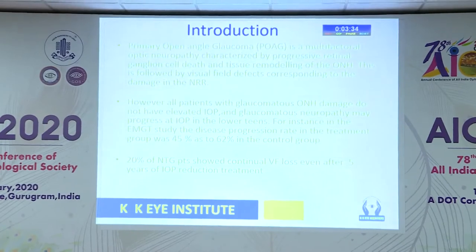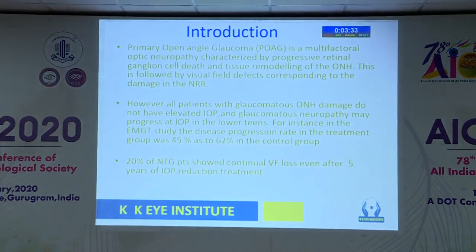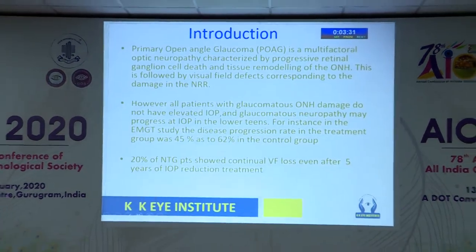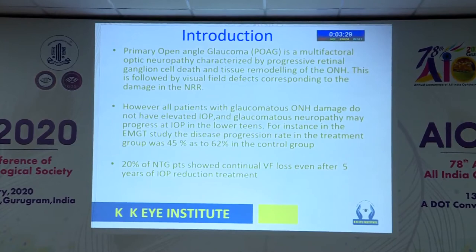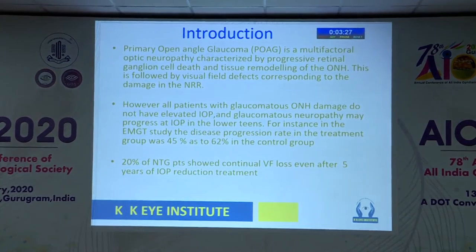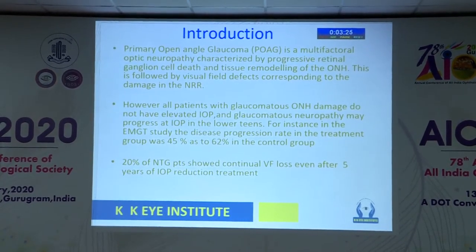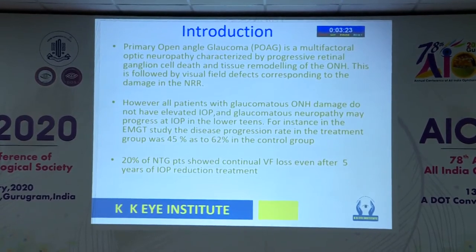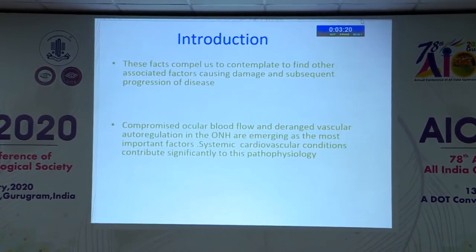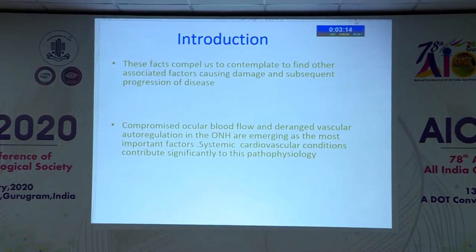Coming to the introduction, POAG as we all know is a multifactorial optic neuropathy characterized by progressive RGC death and tissue remodeling, followed by visual field effects corresponding to the NRR damage. However, all the patients with glaucomatous damage do not have elevated IOP, and the neuropathy seems to progress even with IOP in the lower teens. These facts compel us to contemplate and find other associated factors causing damage and subsequent progression of the disease.